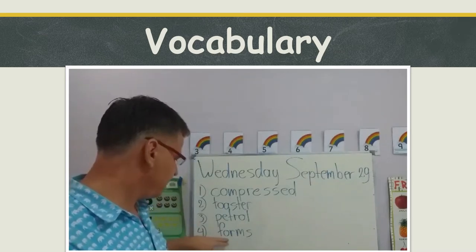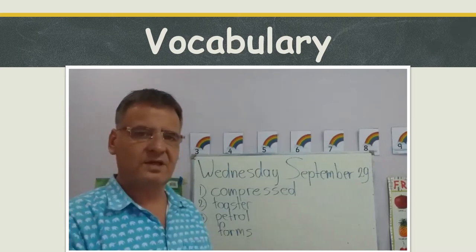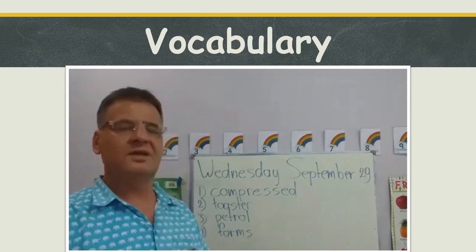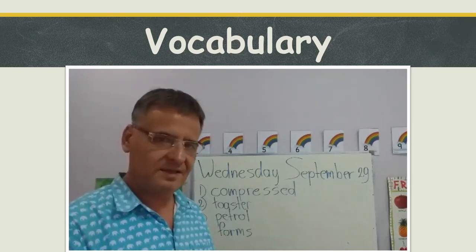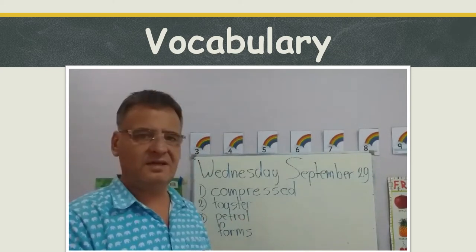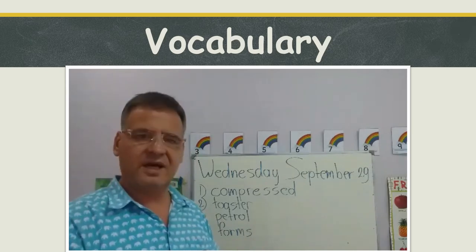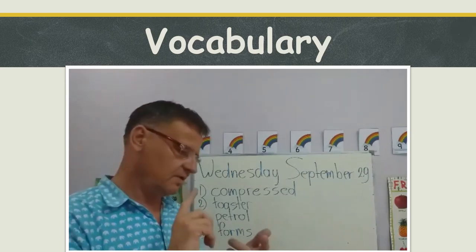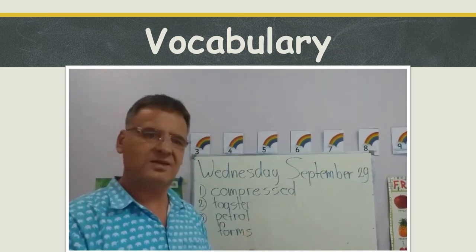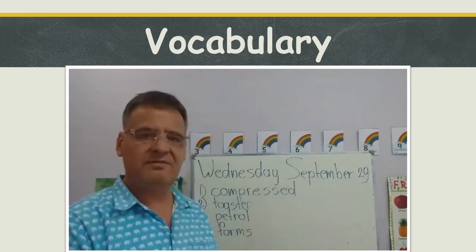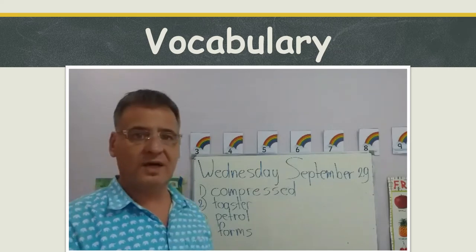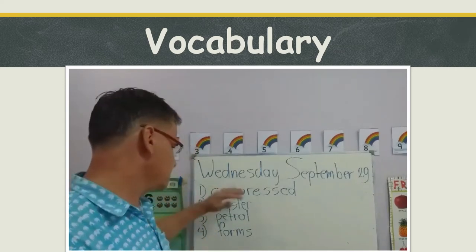Number four: 'forms.' Instead of this word you can use 'types' or 'kinds.' Different forms of energy means different types of energy. For example, electrical energy is one form, elastic potential energy is another form, and gravitational energy is another form. Those are all energy forms.